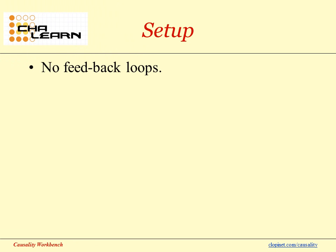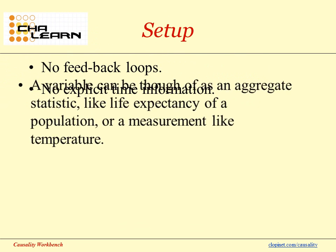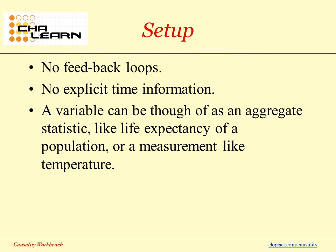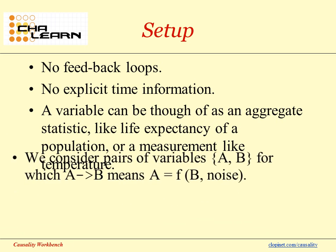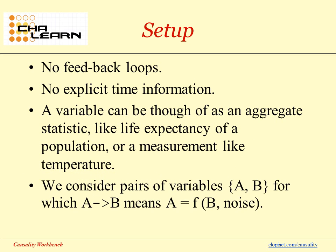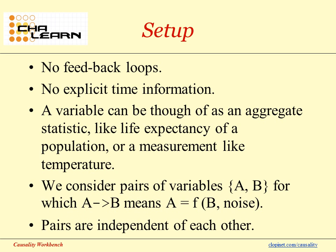But we will assume that there are no feedback loops, no explicit time information, and that a variable can be thought of as an aggregate statistic, like life expectancy of a population, or a measurement, like temperature. We consider pairs of variables A and B, for which A causes B means A is a function of B and some noise, representing other variables. Pairs are drawn independently of each other.